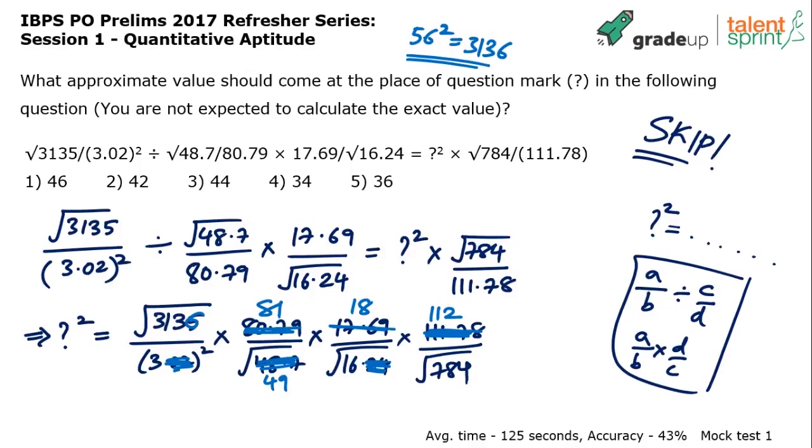Now, do the calculation. Now, what happens? So, if I write the next step, square root of 3136 is 56 divided by 3 square is 9 into 81. Square root of 49. What is square root of 49? 7 into this is 18 as it is. I think just give me a second, to not confuse you guys.